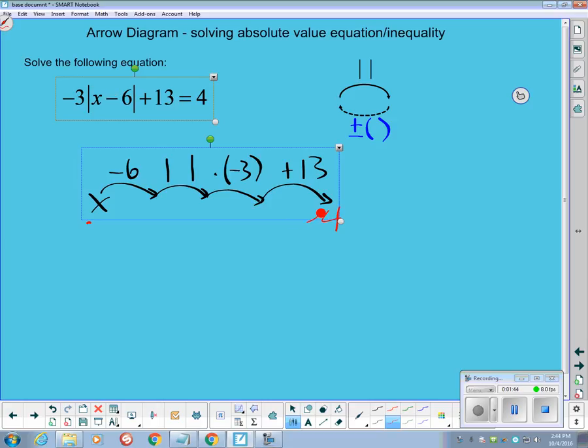So we need to create inverse arrows. As we come back, the inverse of adding 13 is subtracting 13. The inverse of multiplying by negative 3 is dividing by negative 3 or multiplying by negative 1 third.